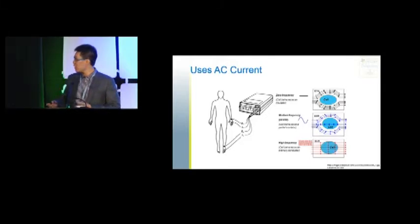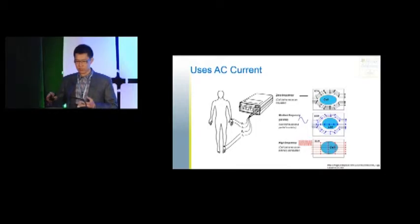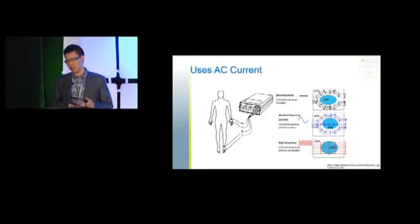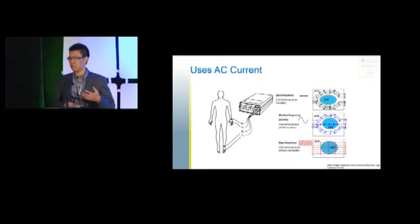How does it work? You can see a diagram of a person on the left-hand side, with the machine represented as a box, and two connectors to the upper limb and two to the lower limb. Different currents are applied — at no frequency, all the current passes through extracellular water. As the frequency is applied at various levels, it passes through part of the cell. By subtracting the measurements, the machine is able to calculate what the composition of the cells are, as different frequencies show different things.